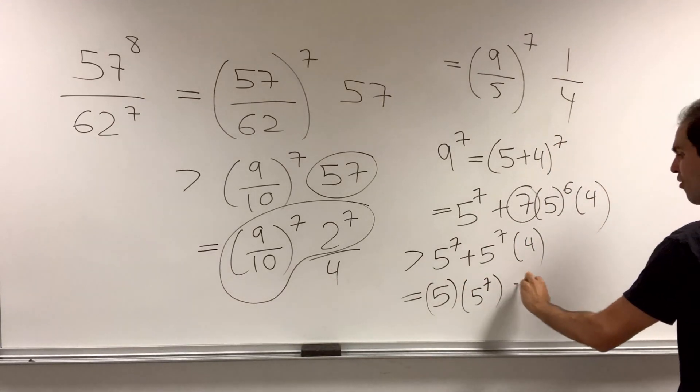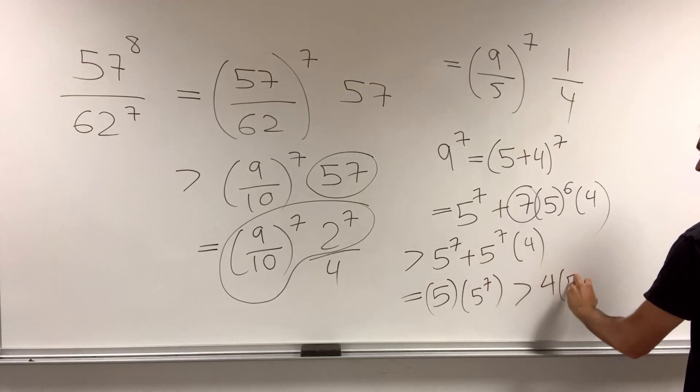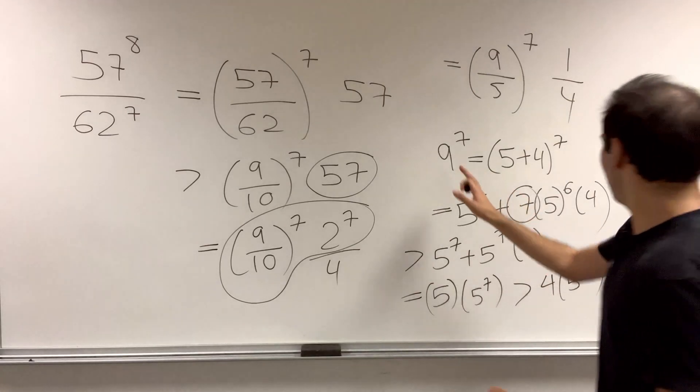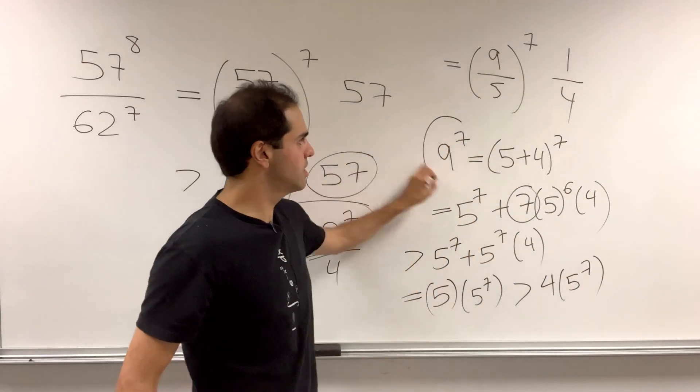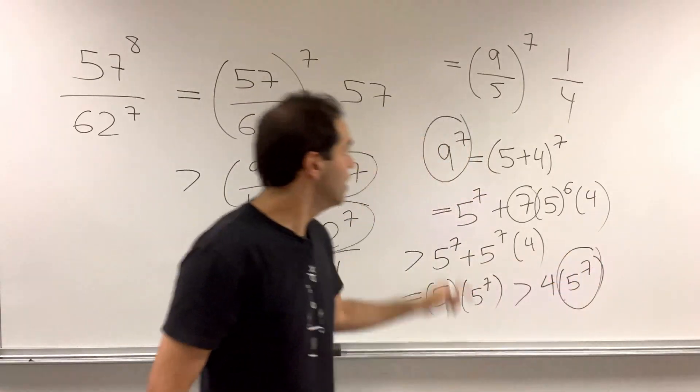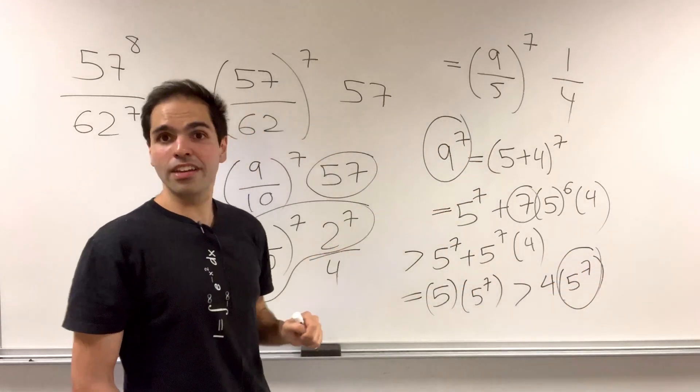Well, which is bigger than 4 times 5 to the 7th. So if you do 9 to the 7th divided by 5 to the 7th, you indeed get that it's bigger than 4.